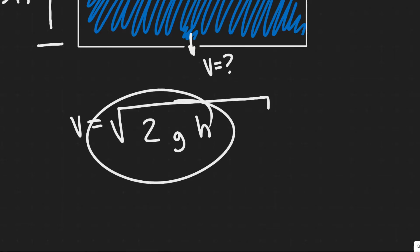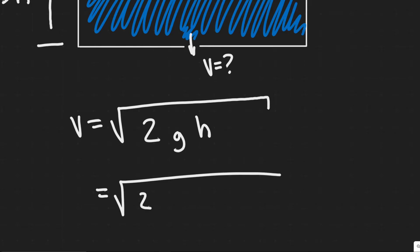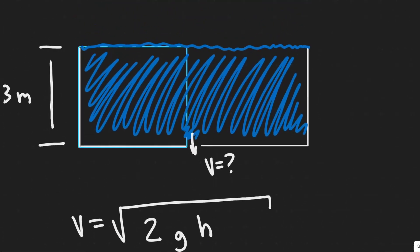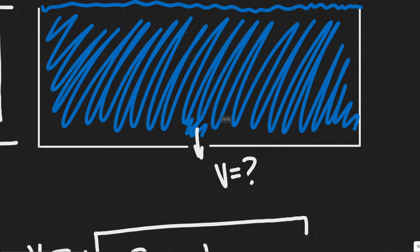So the formula is the square root of 2gh and so 2 is just a constant, g is just the acceleration due to gravity, 9.8 meters per second squared. And then h is essentially the difference in height or the distance from the hole all the way up to the surface level.